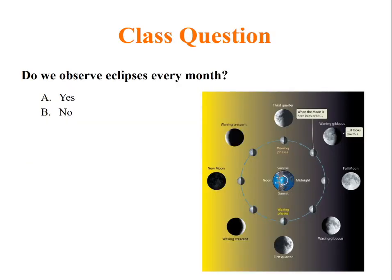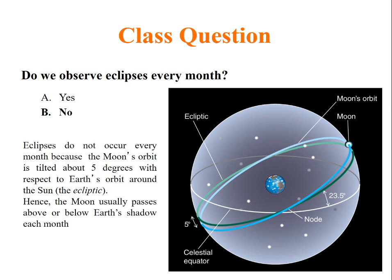The question is, do we observe eclipse every month? The answer is no. The reason eclipses do not occur every month is Moon's orbit is tilted about 5 degrees with respect to Earth's orbit around the Sun.